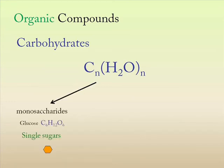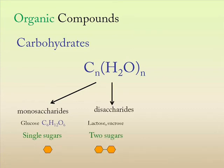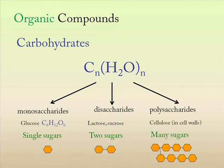Monosaccharides are single sugars, such as glucose. Things like disaccharides are where you have two sugar units joined together, such as lactose and sucrose. Or what you might have are polysaccharides, such as cellulose, where you join lots and lots of sugars together.